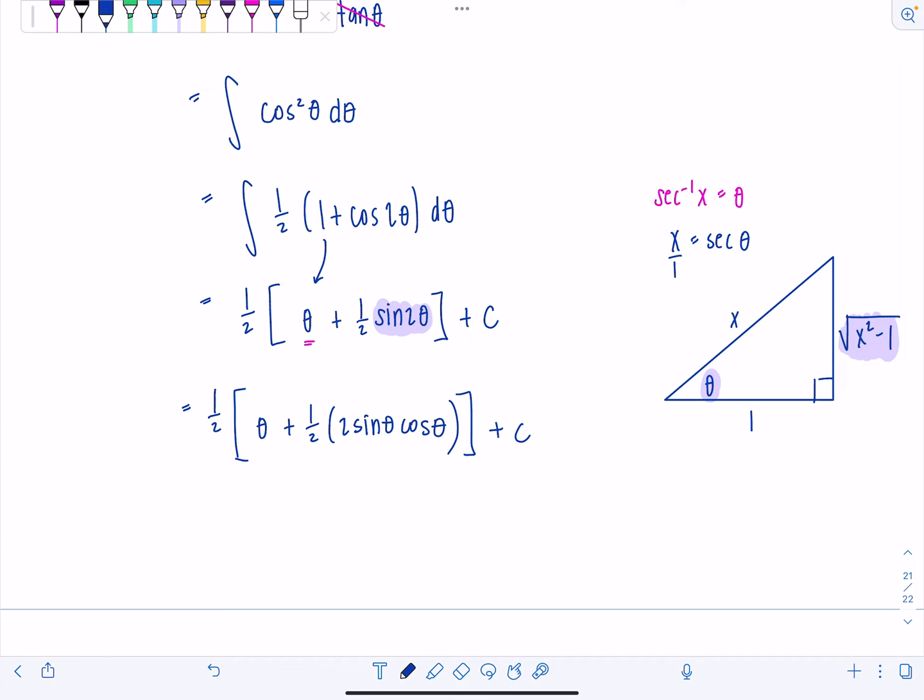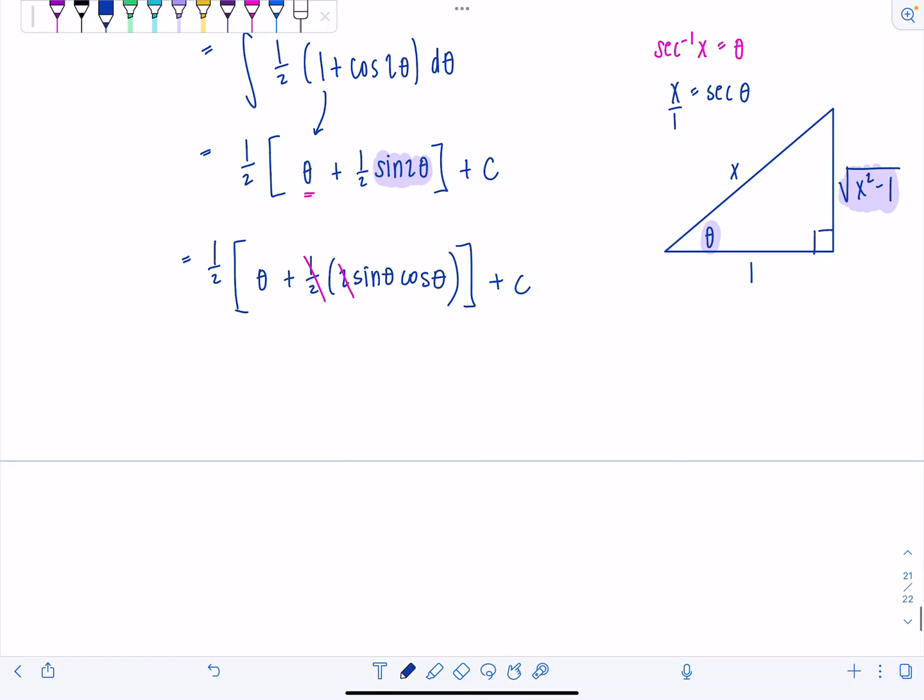So this is theta plus one half times two sine theta cosine theta, plus c. And right away I can tell the one half and the two will cancel.